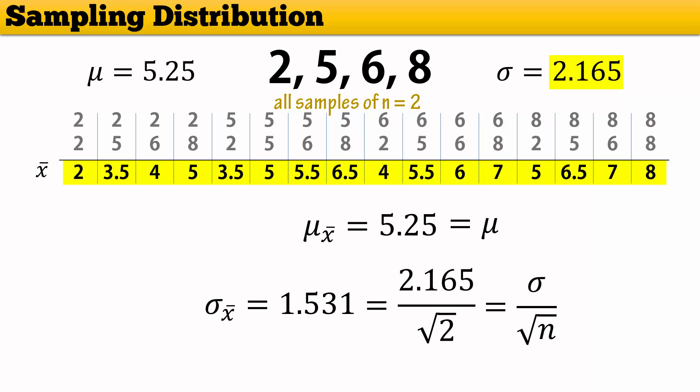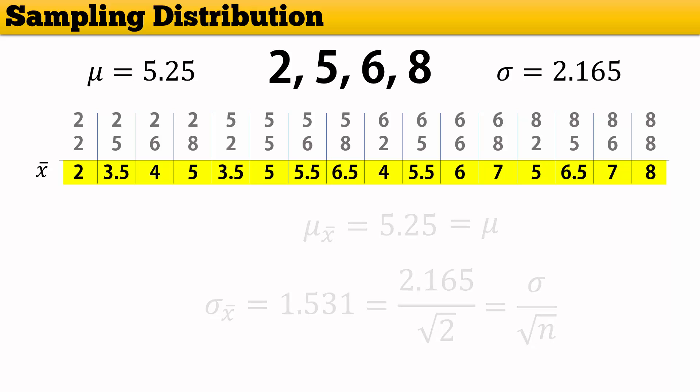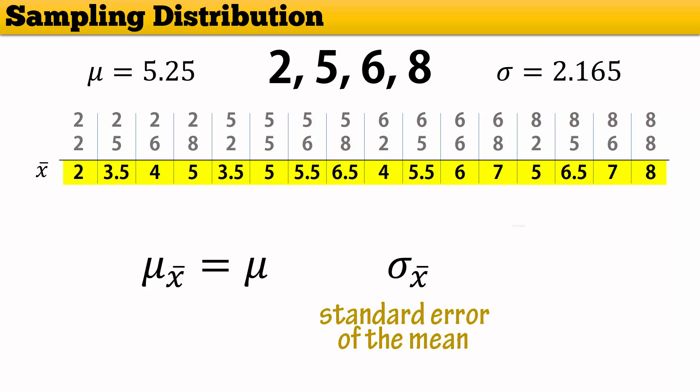That is, sigma over square root of n. In essence, the mean of the sampling distribution of sample means will always equal the population mean. And the standard deviation of the sample means, also called standard error, will equal the population standard deviation divided by the square root of n.